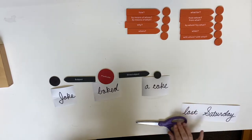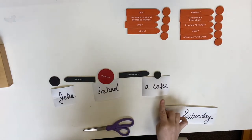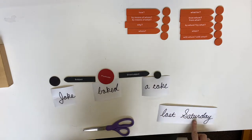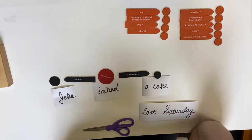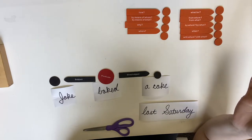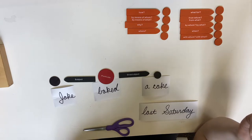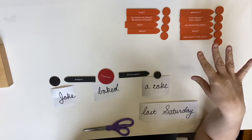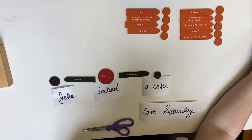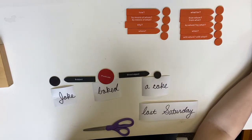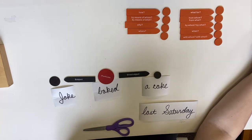However, we aren't done, are we? 'Jake baked a cake last Saturday.' So I want to see if any of our orange arrows answer that. How? Does it say how he baked the cake? Did he bake the cake in his pajamas? We don't know. By means of whom? By means of what? Why? Does it say why he baked a cake? No — maybe he baked it for somebody's birthday or just because he wanted to eat cake, but it doesn't say. Where? We don't know where he baked the cake.